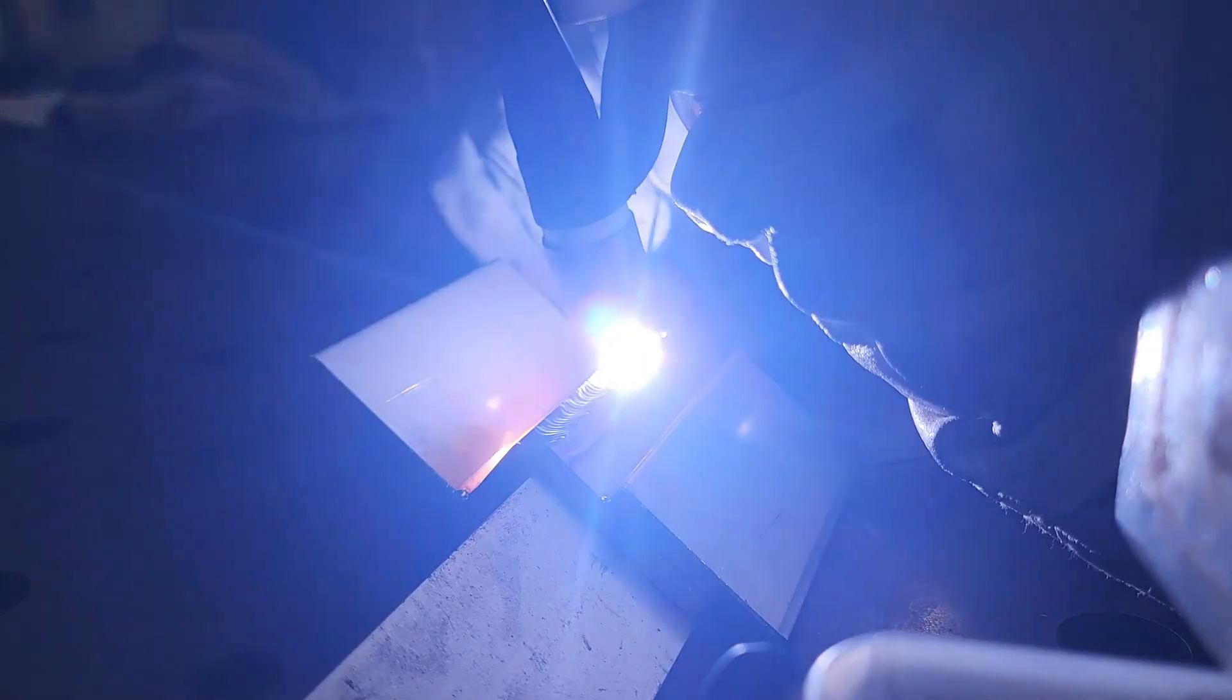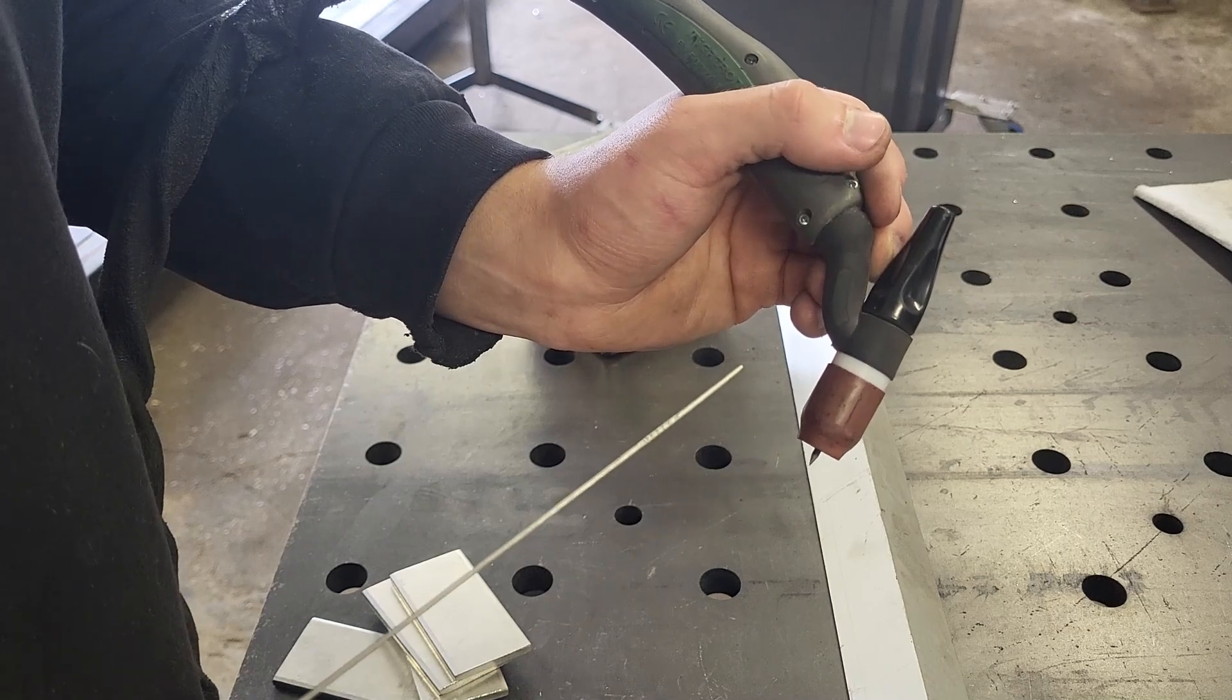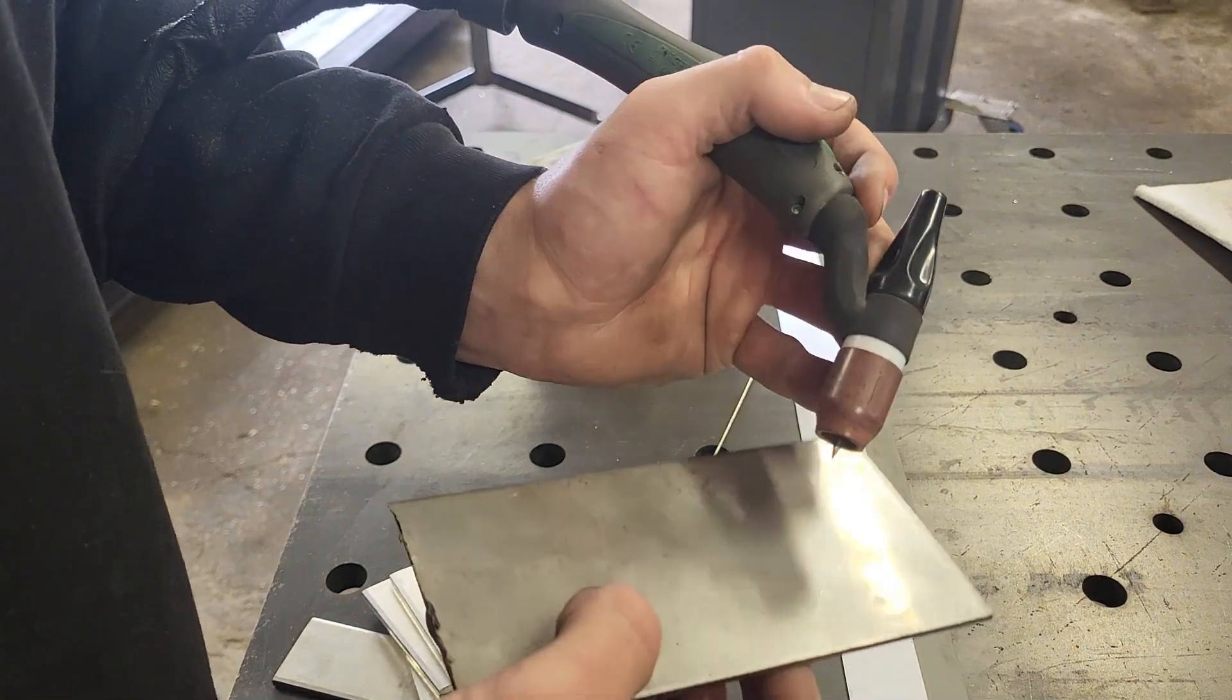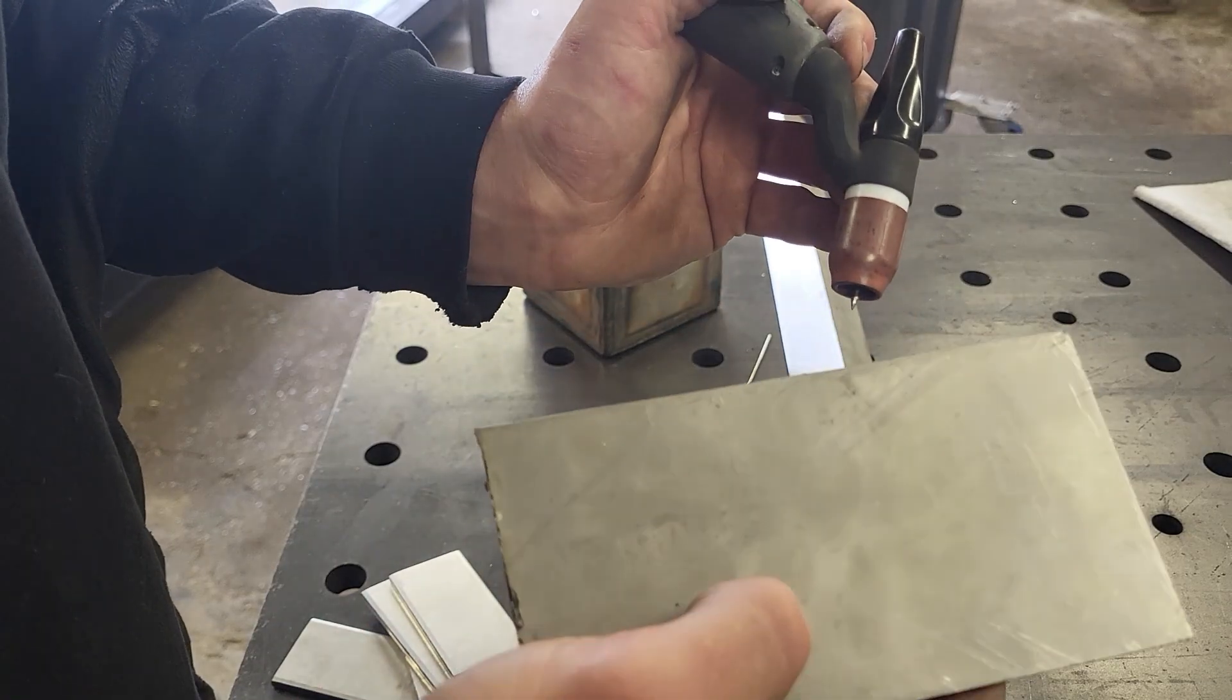In today's video, I'll be going over the basics of TIG welding. For those wondering, TIG welding is a welding process where a current is forced to jump a gap from the electrode to the parent material.